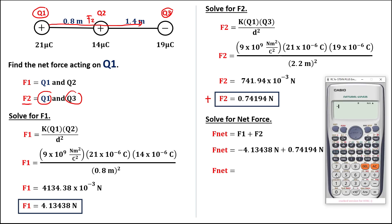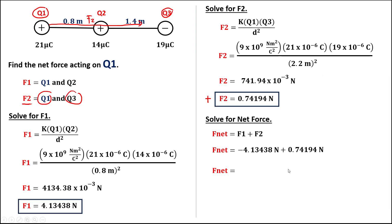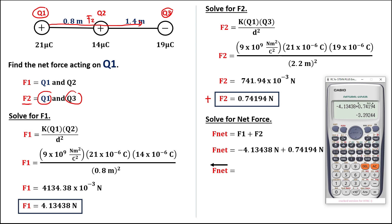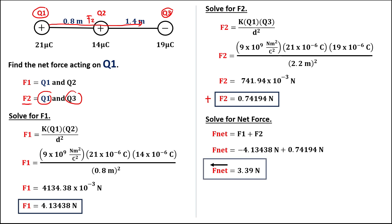The net force equals negative 4.13438 plus 0.74194, which gives a negative result. Since the result is negative, the direction of the net force is to the left, and the magnitude is 3.39 newtons. So the net force acting on the first charge is 3.39 newtons to the left.